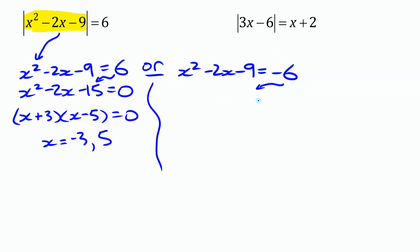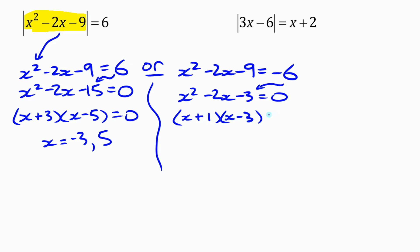For the second case, moving the negative 6 over gives x squared minus 2x minus 3 equals 0. That factors as (x+1)(x-3), which means x equals negative 1 or x equals 3. So we actually have four potential solutions: negative 3, negative 1, 3, and 5. But we still need to check that they all work in the original equation.